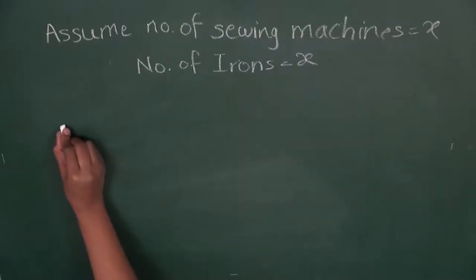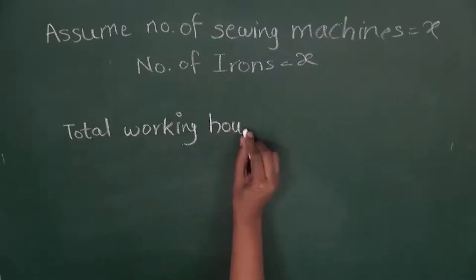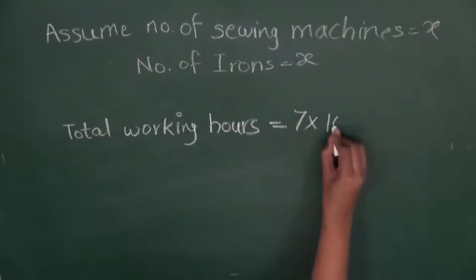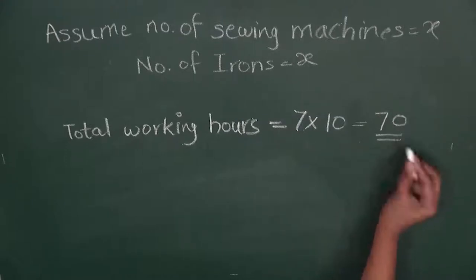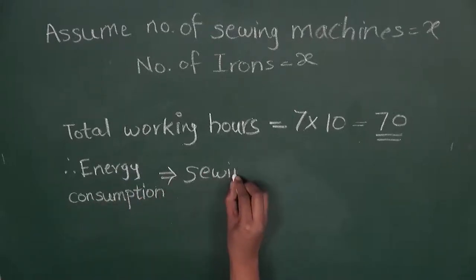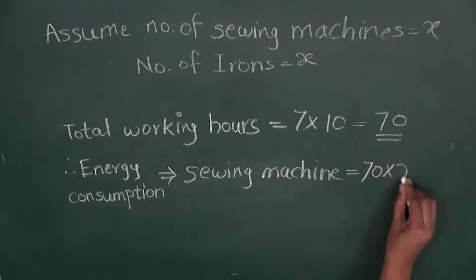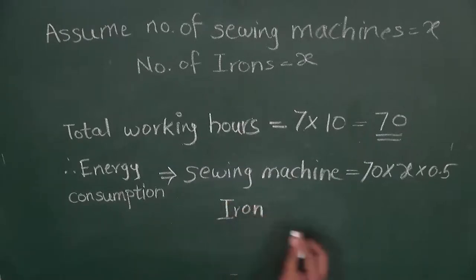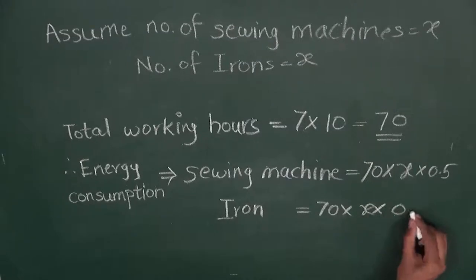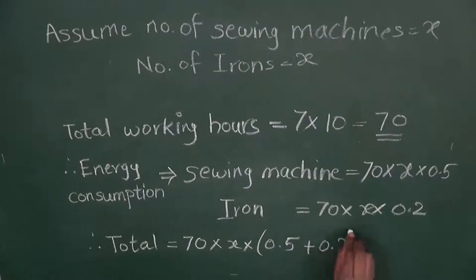Now let us calculate the power used by the set of irons and sewing machines. The total working hours are 10 hours a day for all 7 days, so they were operated for 70 hours. For the sewing machines: 70 × x × 0.5. For the irons: 70 × x × 0.2. The total energy is the sum of these two: 70 × x × (0.5 + 0.2) = 70 × x × 0.7.